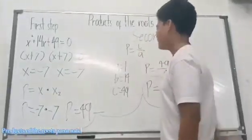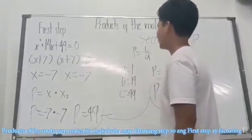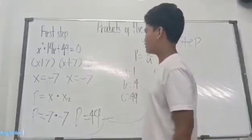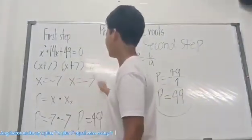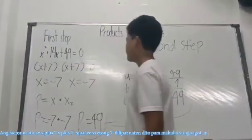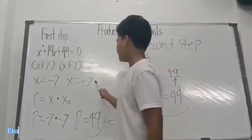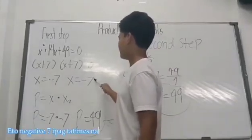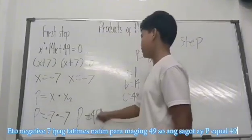Product of roots, how do we do this? There is a step and we'll do it. So the first step is factoring. The factors are x plus 7 times x plus 7 equals 0. And if 7 is transferred here, it becomes negative 7. So the answer is x equals negative 7. Then we multiply negative 7 times negative 7, which gives us 49.